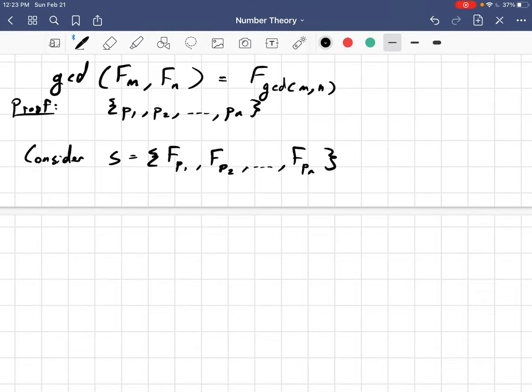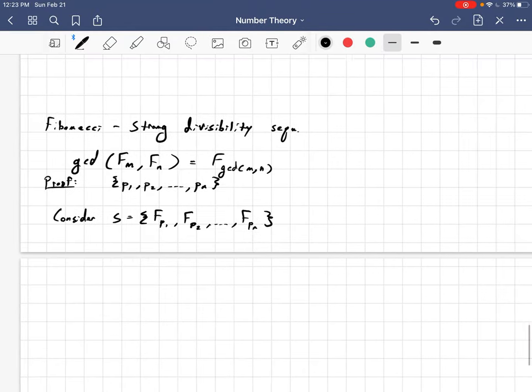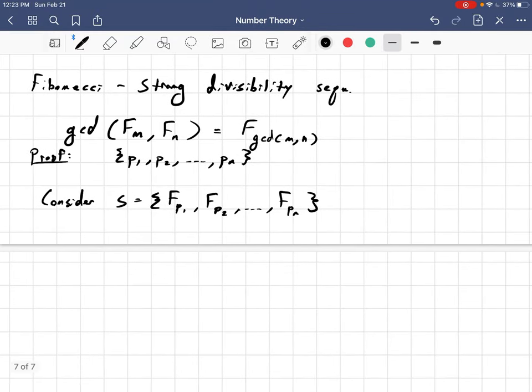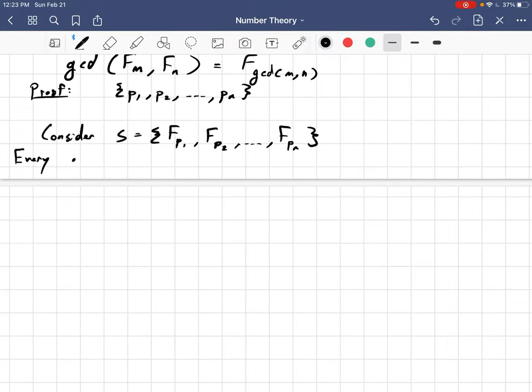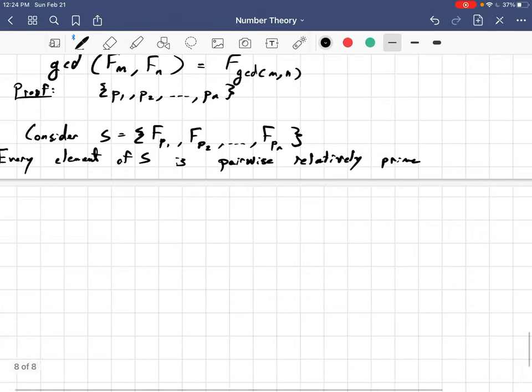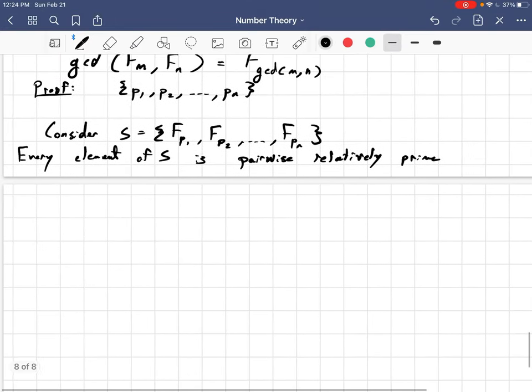And so now by the fact that the Fibonacci sequence is a strong divisibility sequence, in other words this property is true, then every element of S is what we call pairwise relatively prime, and that's a fancy word for saying that any two elements of S are relatively prime, any two that you choose. And we can see that because